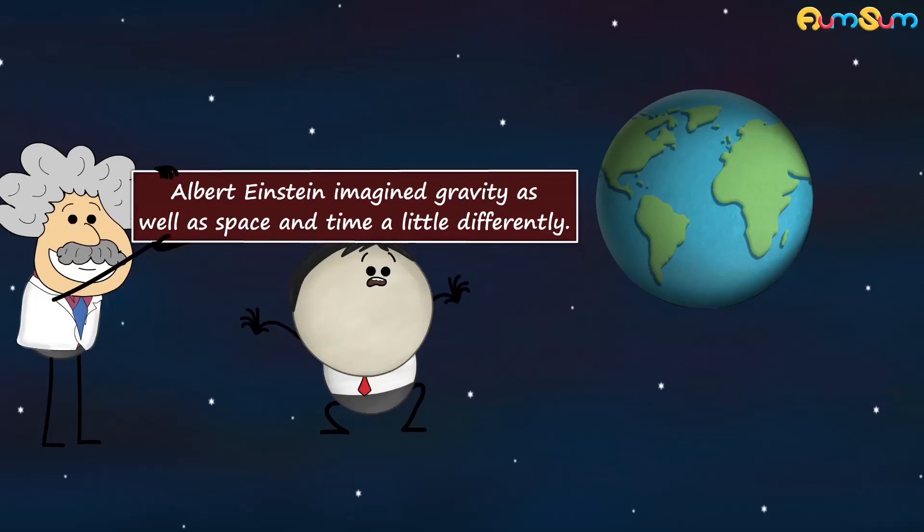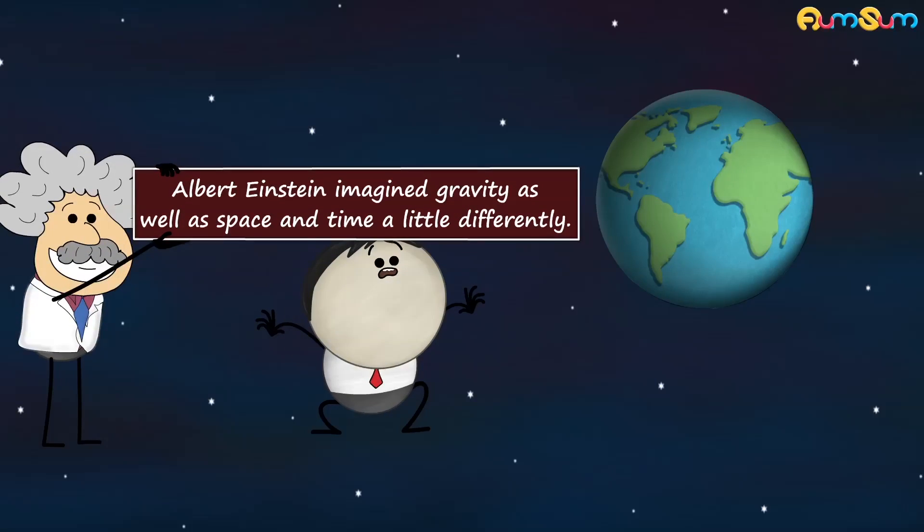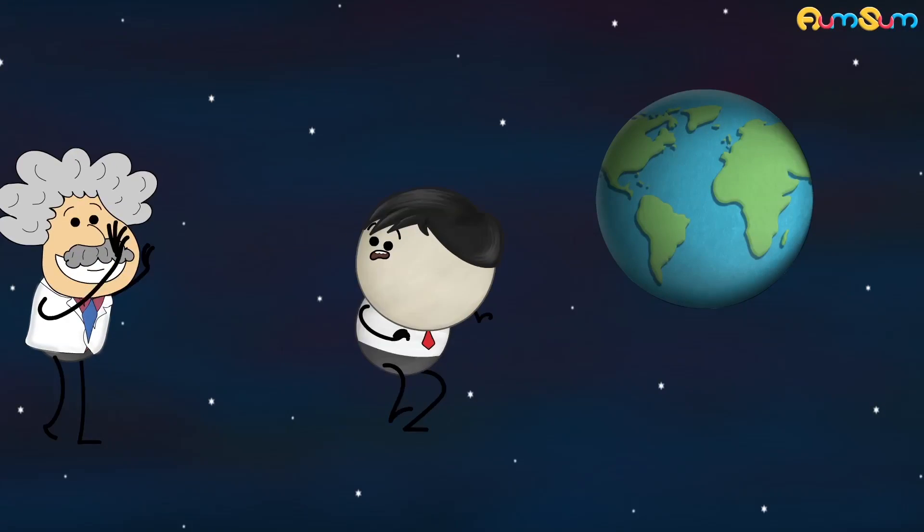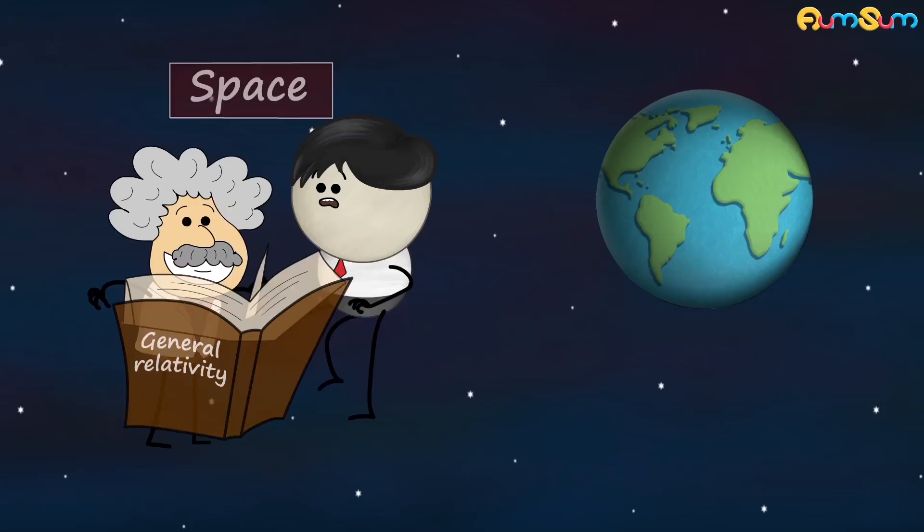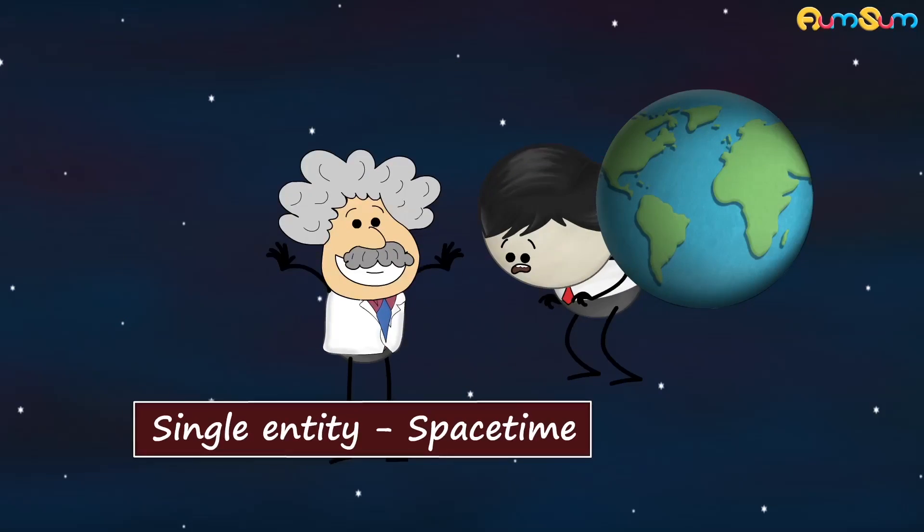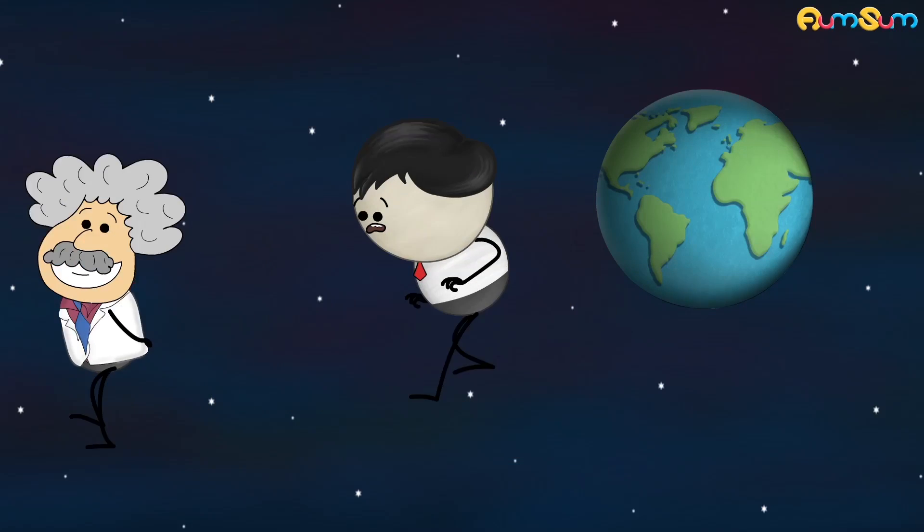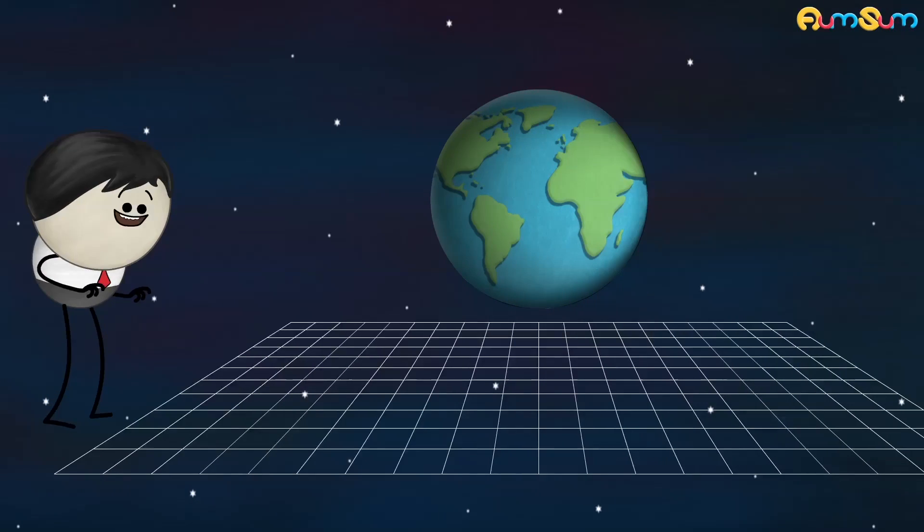However, Albert Einstein imagined gravity as well as space and time a little differently. His theory of general relativity unified two separate entities, space and time into a single entity called space-time. Space-time can be considered as the fabric of universe.